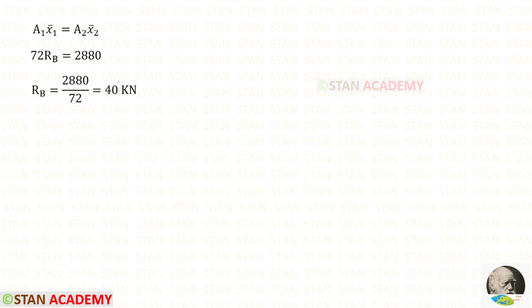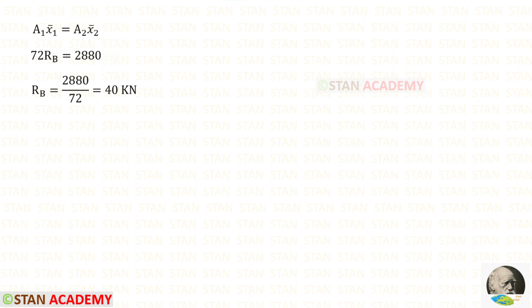For Area 2 times X2 bar, we get 2880. We know Area 1 X1 bar and Area 2 X2 bar — we have found both of them. Let us apply them. Finally for RB, we will get 40 kN.